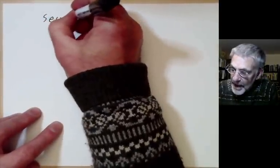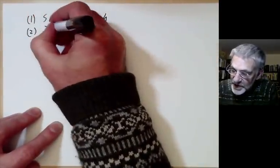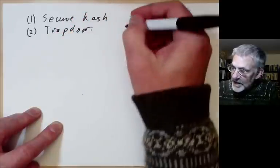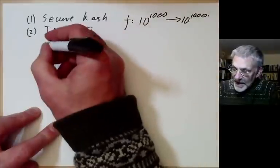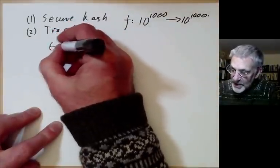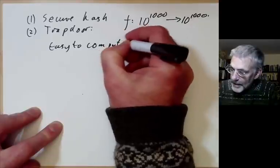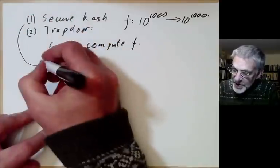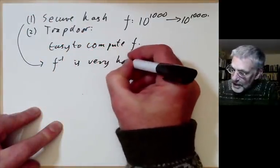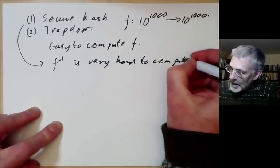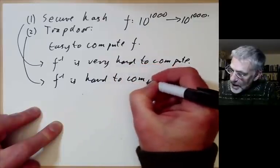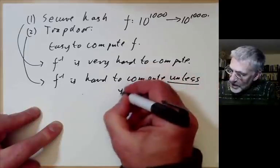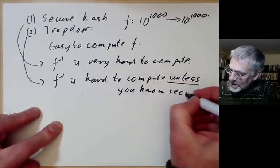There's a distinction between a trapdoor function and a secure hash function. Both are functions from a set with, say, 10 to the 1000 elements to 10 to the 1000 elements, and both are reasonably easy to compute. For a secure hash, the inverse f⁻¹ is very hard to compute. For the trapdoor function, f⁻¹ is hard to compute unless you know some secret — that secret is the trapdoor.